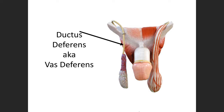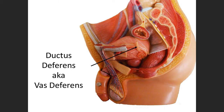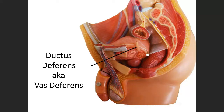Sperm travels through a tube called the ductus deferens, also known as the vas deferens — either term is acceptable. The ductus or vas deferens connects the external testicle to the internal portion of the body. You don't have to say right or left. This leads towards the testicle, so label it as the ductus deferens or vas deferens — there could be test questions on it this semester.